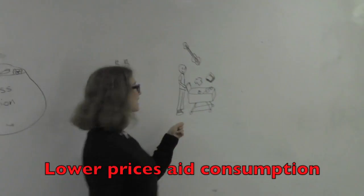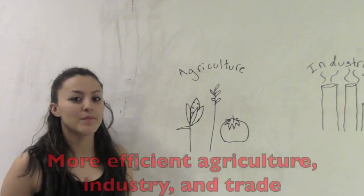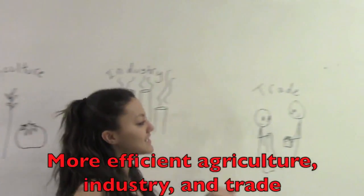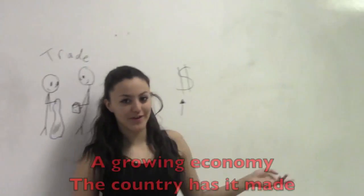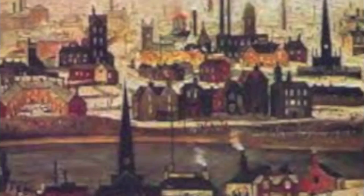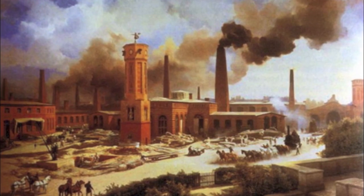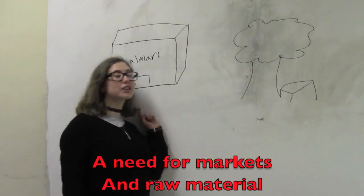Lower prices aid consumption. More efficient agriculture, industry and trade. A growing economy the country has made. A growing economy, the world evolved — in 1715, Industrial Revolution begins a period of world evolution. A need for markets.